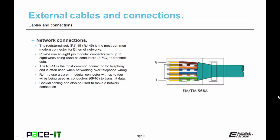Now let's move on to network connections. And we begin with the registered jack 45, the RJ45. It is the most common modern connector for ethernet networks. The RJ45 uses an eight pin modular connection with up to eight wires being used as conductor. This is technically called an 8P8C modular connection. And it's used to transmit data over the network.